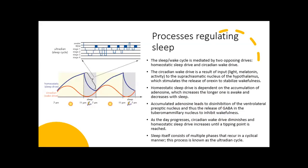Processes regulating sleep. The sleep-wake cycle is mediated by two opposing drives: the homeostatic sleep drive and the circadian wake drive. The circadian wake drive results from input of light and melatonin activity to the suprachiasmatic nucleus of the hypothalamus, which stimulates the release of orexin to stabilize wakefulness. Homeostatic sleep drive is dependent on the accumulation of adenosine, which increases the longer one is awake and decreases with sleep. Accumulated adenosine leads to disinhibition of the ventrolateral preoptic nucleus and the release of GABA in the tuberomammillary nucleus to inhibit wakefulness. As the day progresses, the circadian wake drive diminishes and the homeostatic sleep drive increases until a tipping point is reached. Sleep itself consists of multiple phases that recur in a cyclical manner — this process is known as the ultradian cycle.